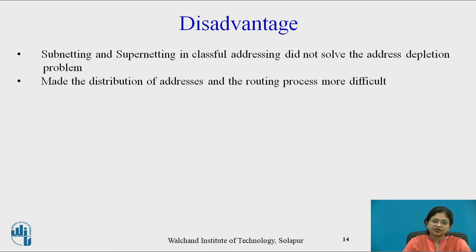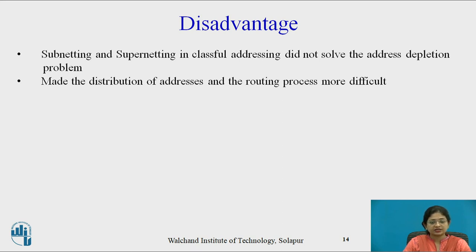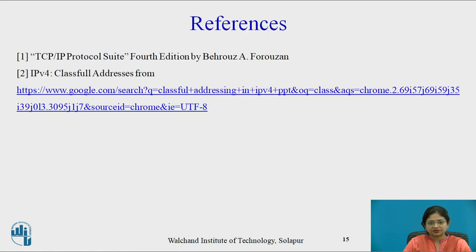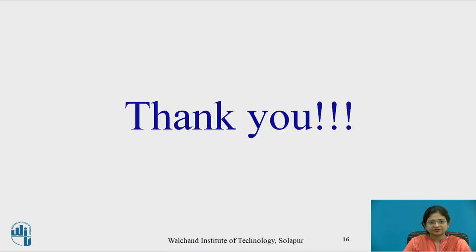Let us see the disadvantages of classful addressing. In classful addressing, Class A and Class B addresses are wasted. Subnetting and supernetting in classful addressing did not solve the address depletion problem; instead, they made the distribution of addresses and the routing process more difficult. In this video, we have learned about IPv4 2-level and 3-level addressing and also the concepts of supernetting and subnetting. These are the references. Thank you.